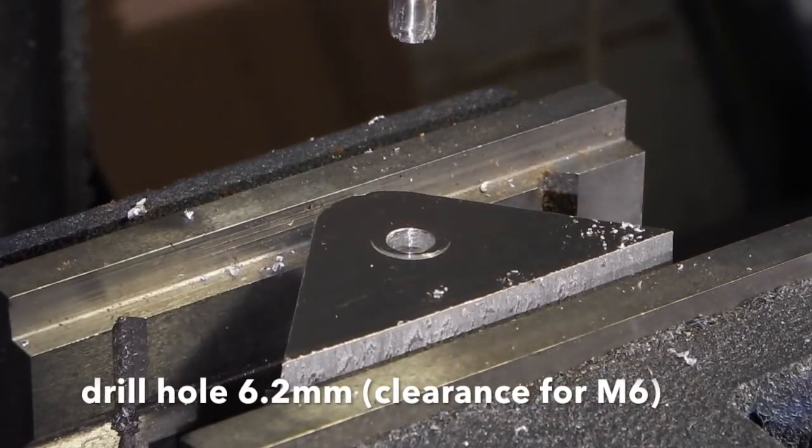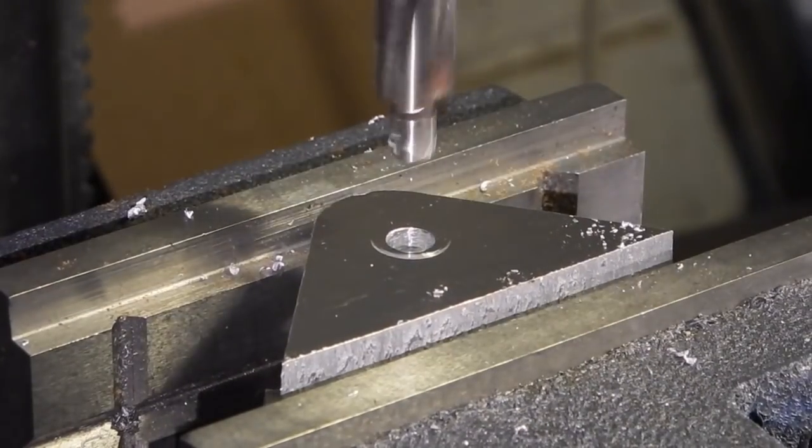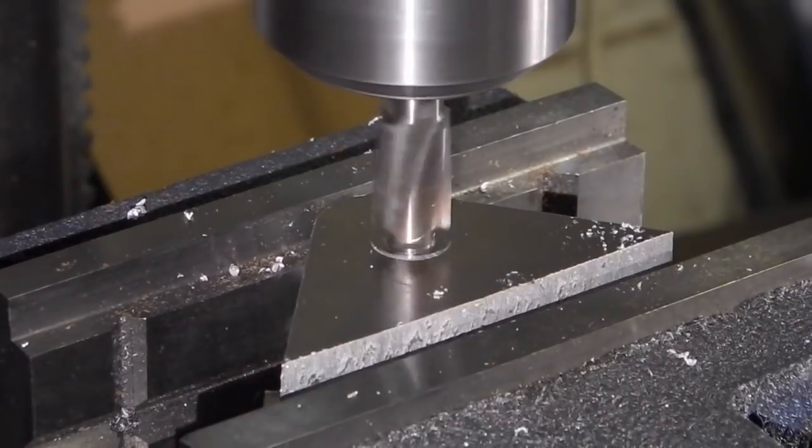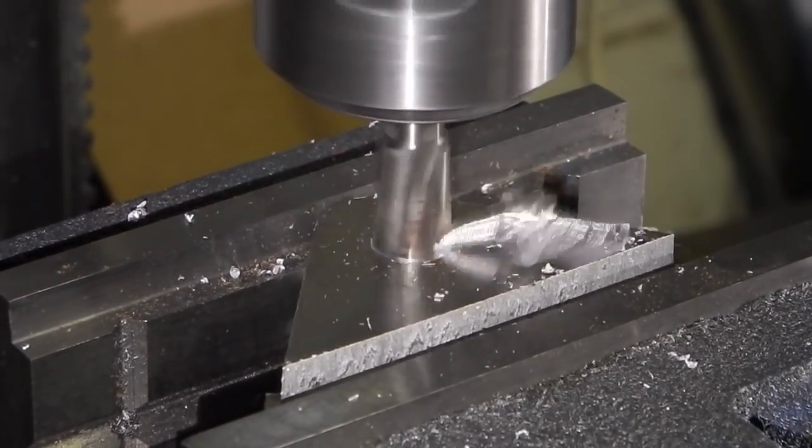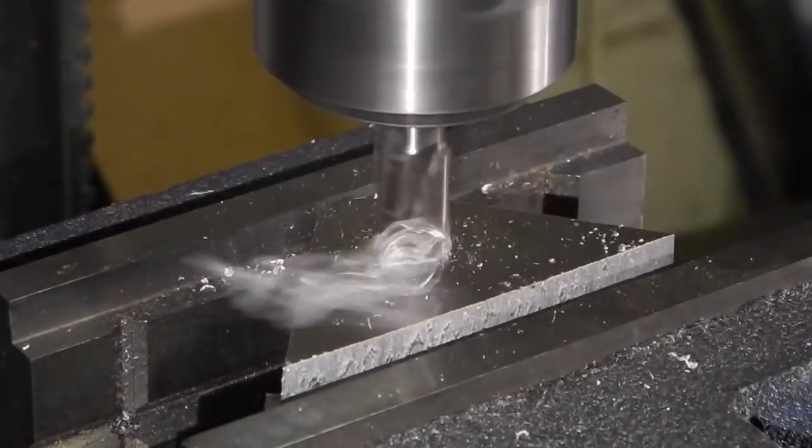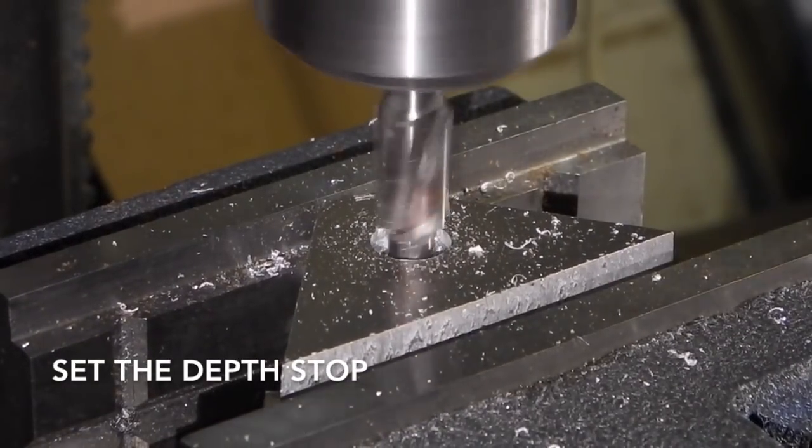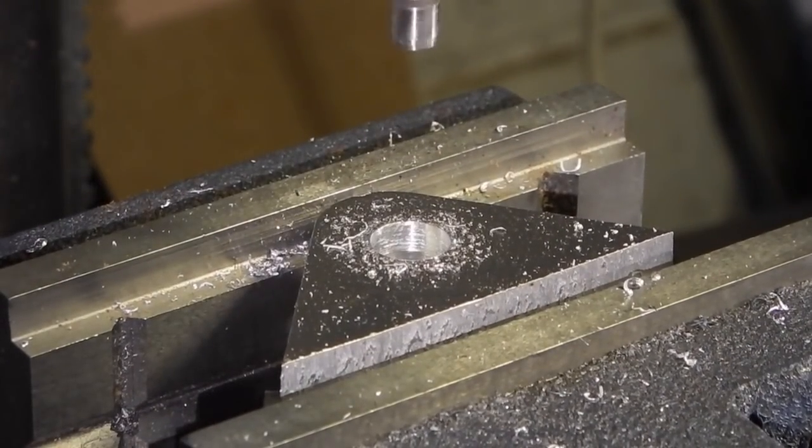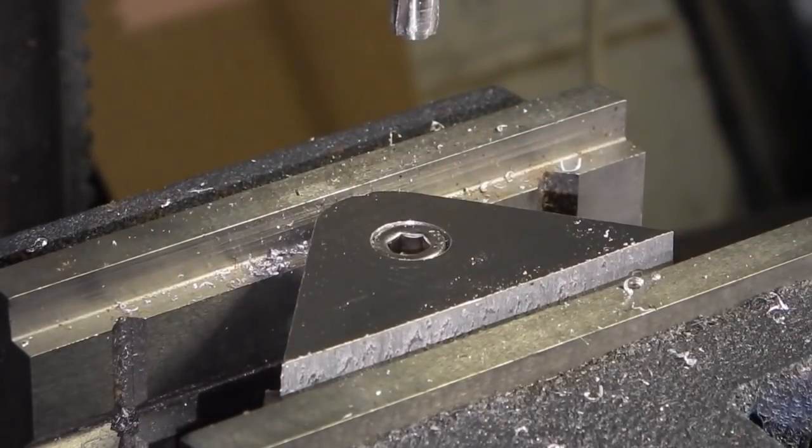So with this tool you drill your 6.2mm clearance hole, and that's counter bored the hole to the correct diameter for a 6mm cap head.